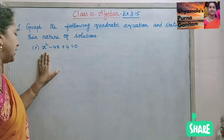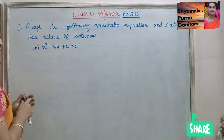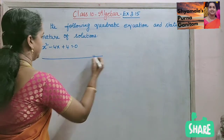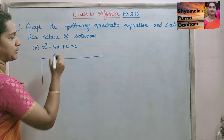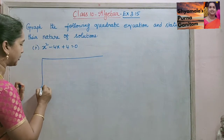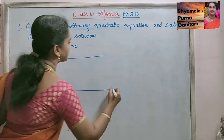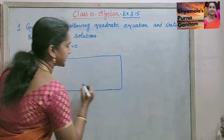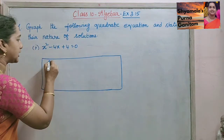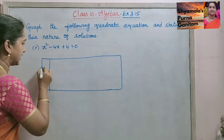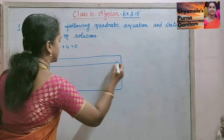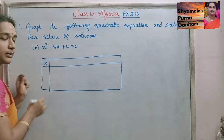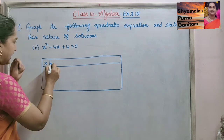The quadratic equation given is x squared minus 4x plus 4 is equal to 0. We will find the coordinate points that have to be plotted in the graph sheet.